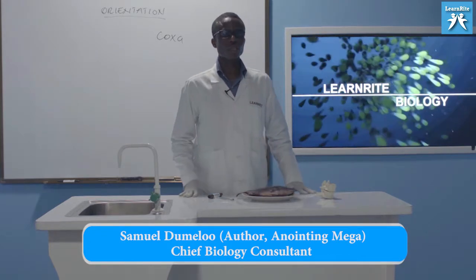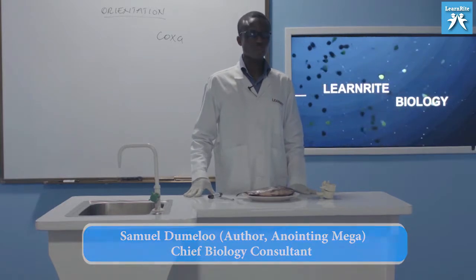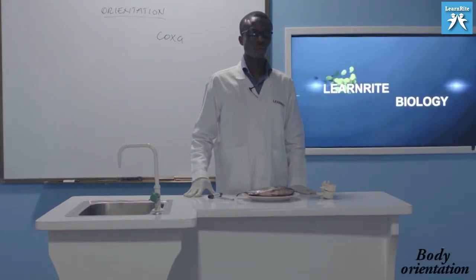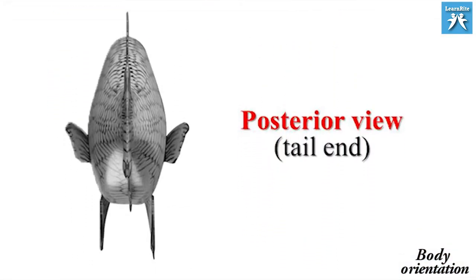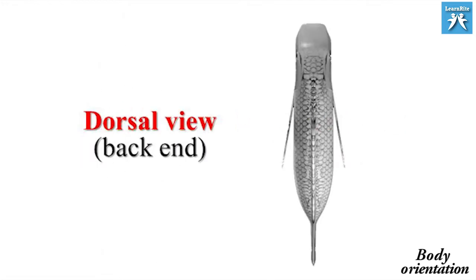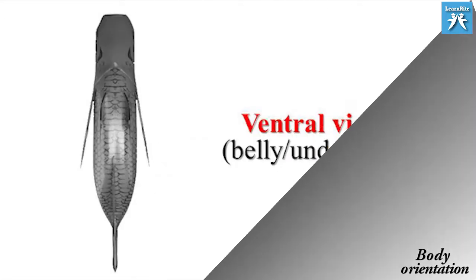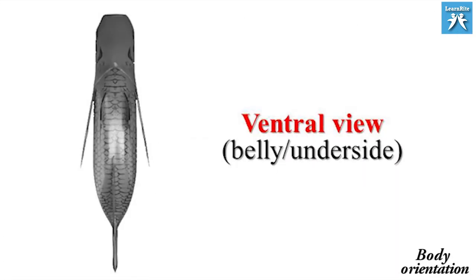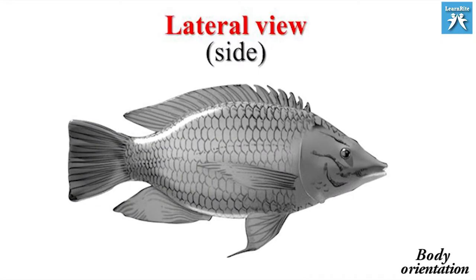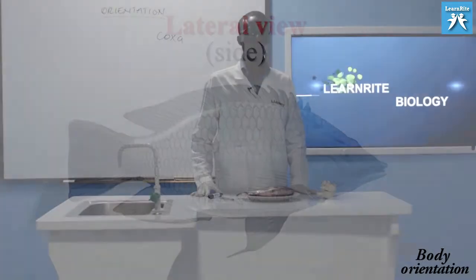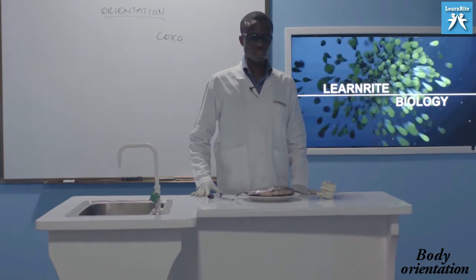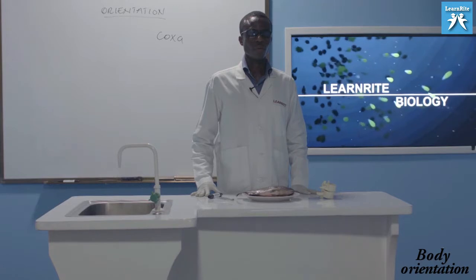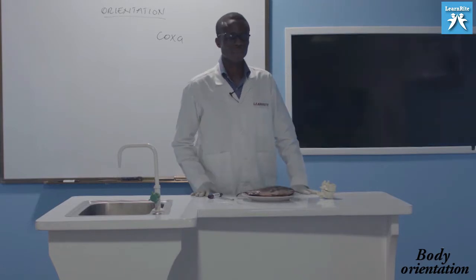I hope you've understood the topic. We have five types of orientation: anterior, which is the head end; posterior, which is the tail end; dorsal, which is the back; ventral, which is the belly or underside; and lateral, which is the side. Keep watching Learn Right Biology. If you have any questions, contact Learn Right Biology. You'll get a better understanding. Thank you.